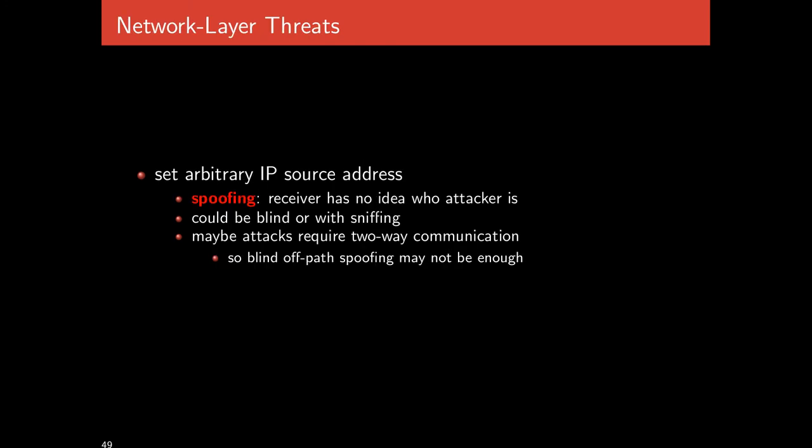Finally, let's look at source address spoofing — we'll get into more detail when we discuss TCP attacks. At the network layer, when sending a packet you provide the source IP address, but there's no guarantee it's actually the correct one. There's no requirement that a computer specify the correct source IP. Your operating system will, because it wants the internet to work correctly. But if you open a raw socket, you can just specify your own.